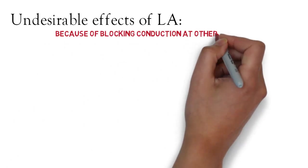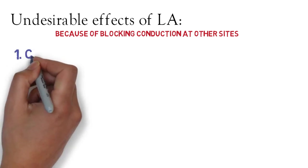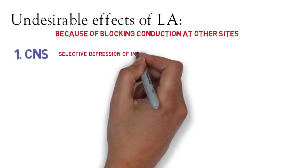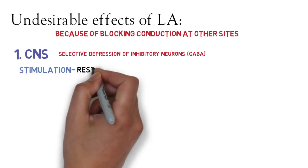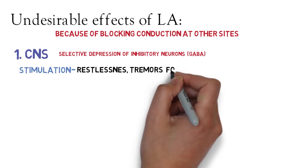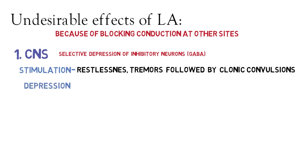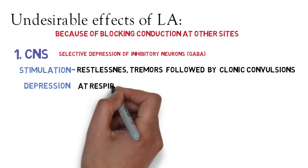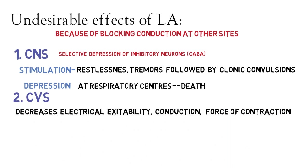Local anesthetics also have undesirable effects due to blockage of sodium channels elsewhere. In the CNS, they mainly inhibit inhibitory neurons (GABA), so stimulation is followed by depression — causing dysarthria, tremor, and clonic-type convulsions, followed by depression of the respiratory center, which can cause death at high concentrations. In the cardiovascular system, local anesthetics decrease cardiac activity, which is why lidocaine can be used as an anti-arrhythmic drug.